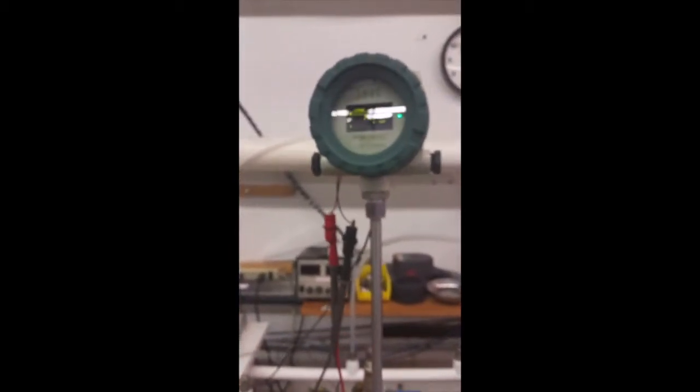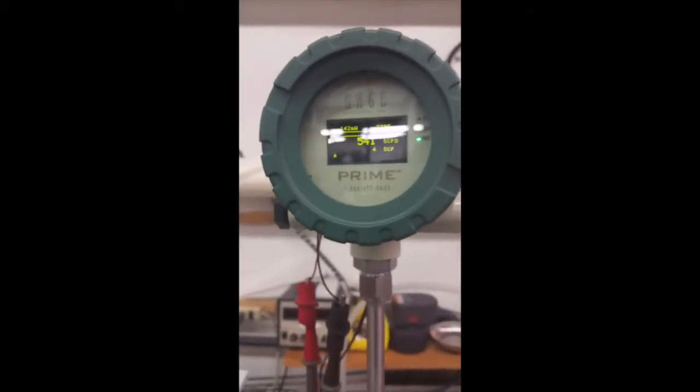And that's it. This is a properly wired internally powered 4 to 20 output for the Sage Prime thermal mass flow meter.